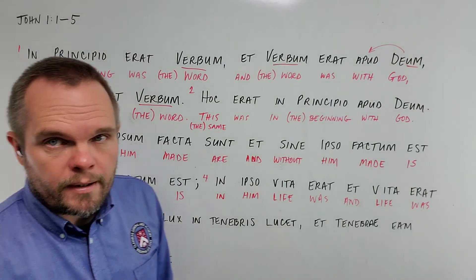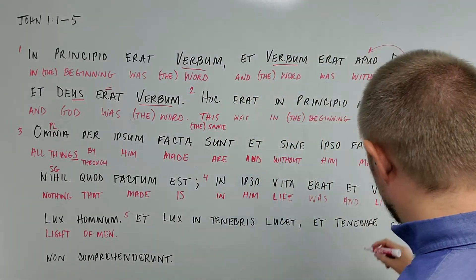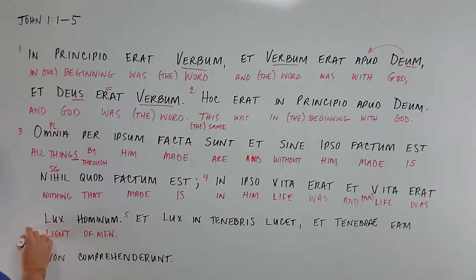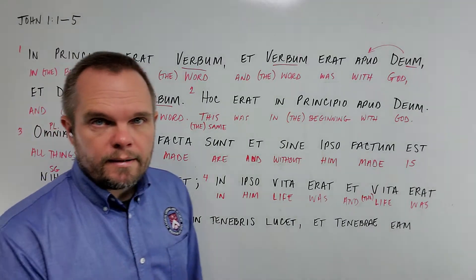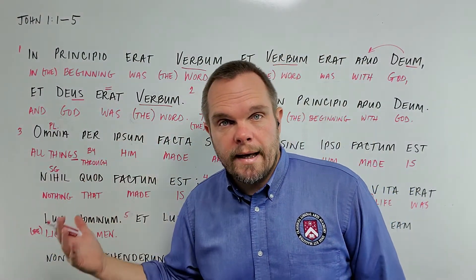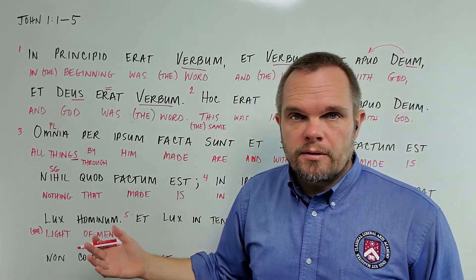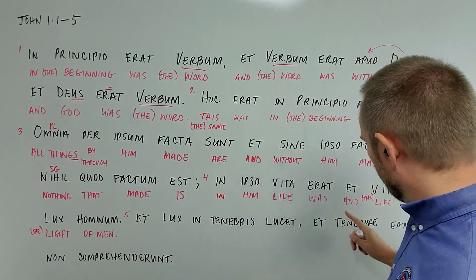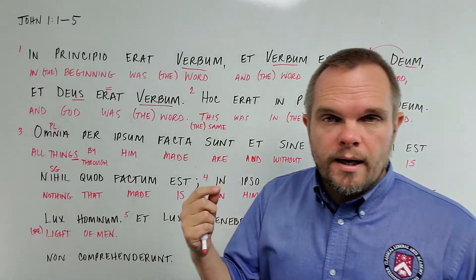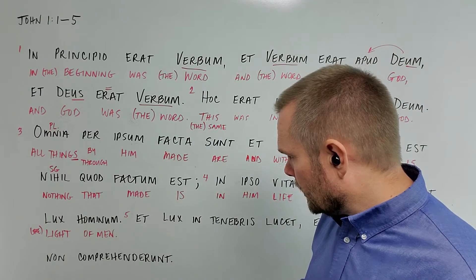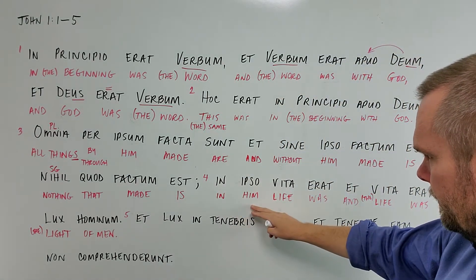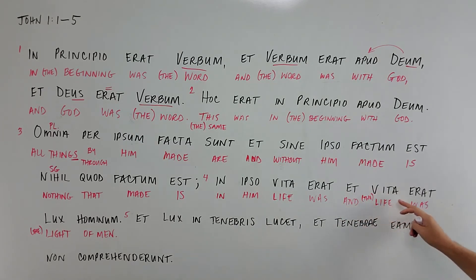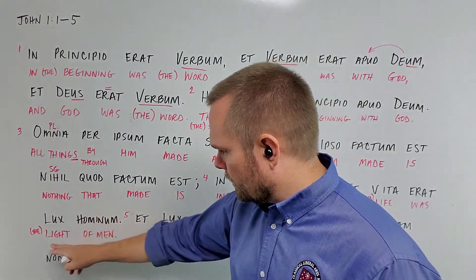That sounds a little clumsy, and if you look at an English Bible, you'll see they add the article: 'and the life was the light of men.' Remember, in Latin there are no articles — no word for 'a,' 'an,' or 'the.' When we make an English translation, we can add English articles whenever needed to make the translation clearer, but we put them in parentheses to remind ourselves they don't come from any Latin word.